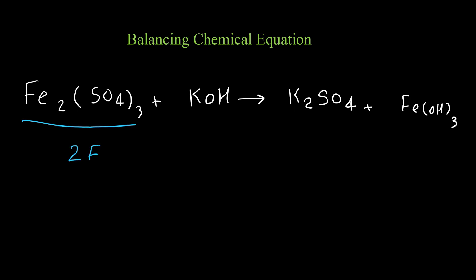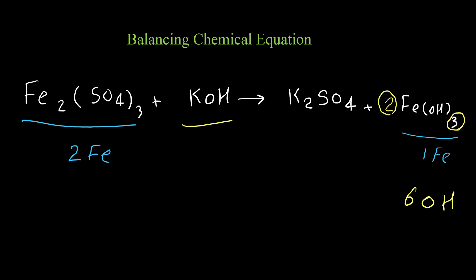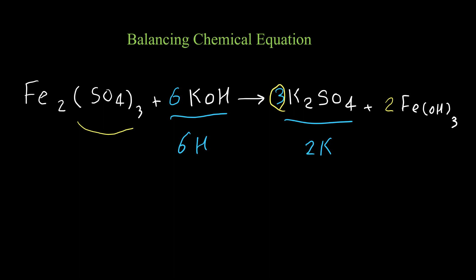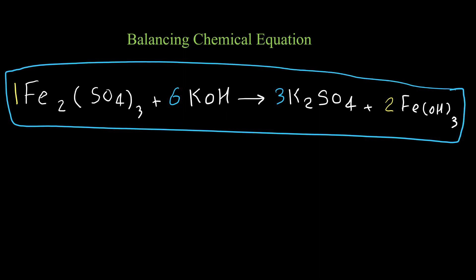For the last example, I start with iron — two on the left and one on the right, so I put two in front of iron hydroxide. Then balancing hydroxide: iron hydroxide has six OH groups, and on the left we have only one OH, so I put six in front of KOH. For potassium: six on the left and two on the right, so I put three in front of K₂SO₄. We can verify using sulfate — same answer either way. The coefficient for iron sulfate is one, and this equation is balanced.